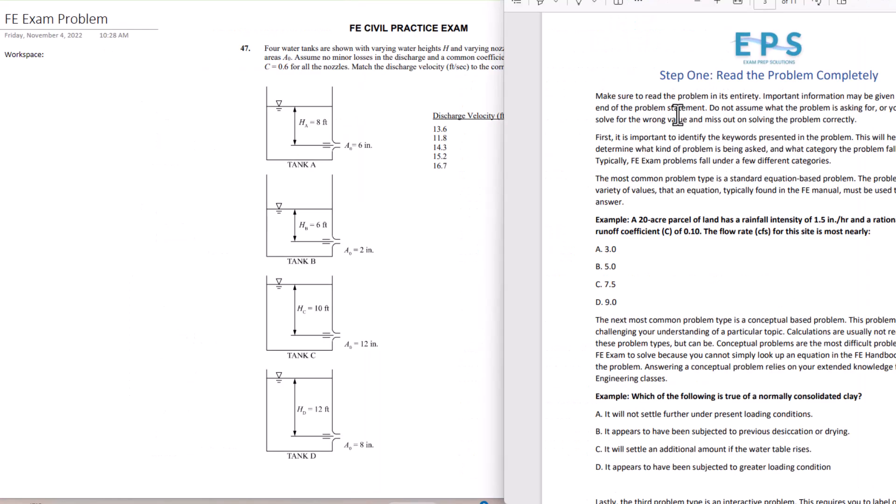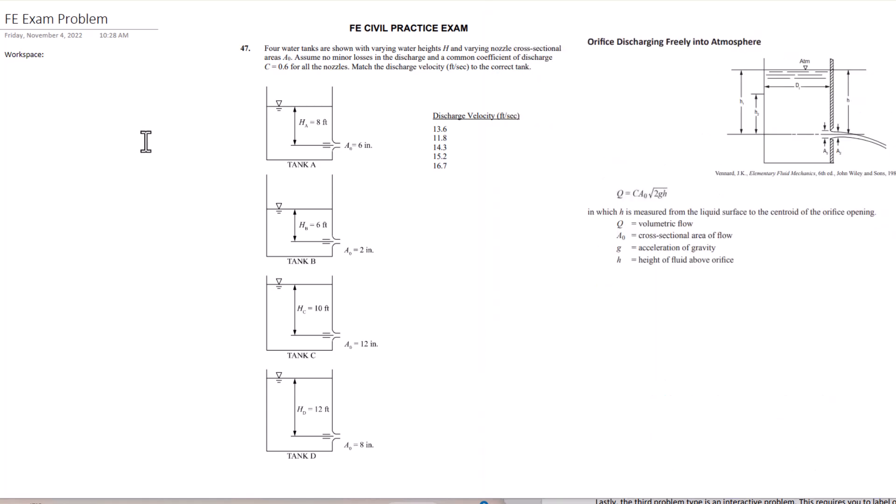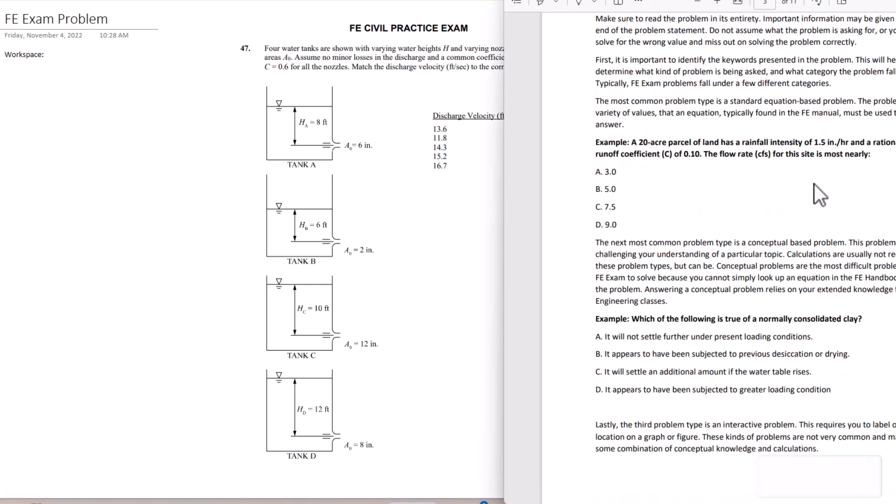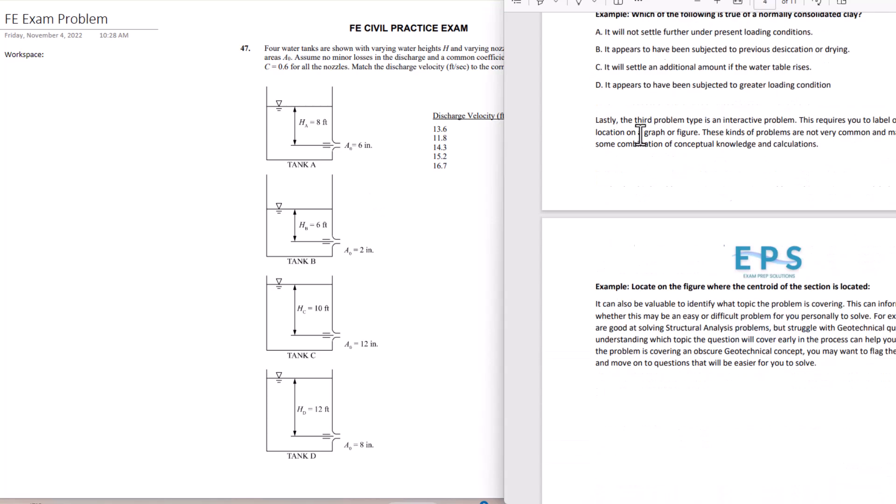Step one is read the problem completely. In the guide I say make sure to read the problem in its entirety. Important information may be given near the end of the problem statement and do not assume what the problem is asking for. We might solve for the wrong value and miss out on solving the problem correctly. So we read through the entire thing: match the discharge velocity feet per second to the correct tank. We got some values in here as well that we want to follow. The most common problem type is a standard equation based problem. The problems give a variety of values that an equation typically found in the FE manual must be used to find the answer.